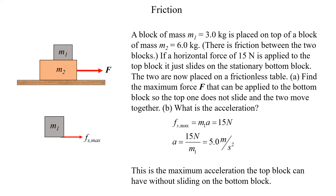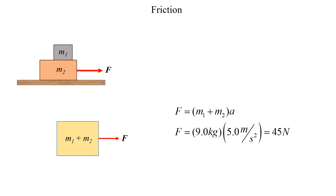Now that we know the acceleration, and both blocks move together, that's the acceleration for the whole two-block system. To find the maximum force, we treat the two blocks together as one object with total mass m1 plus m2. The friction between the two is internal to the system, so the only external force is the applied force F. That applied force equals the total mass times the acceleration: nine kilograms times five meters per second squared gives a maximum force of 45 Newtons. Same result — just a little bit less algebra.